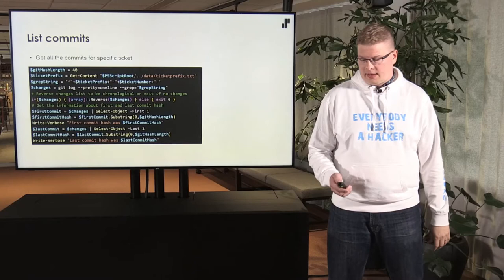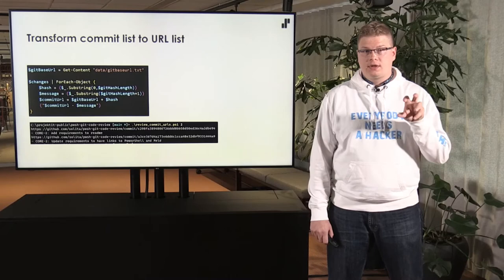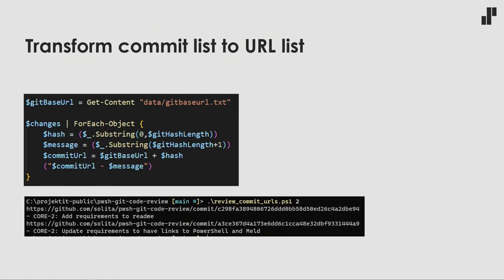Then there are two different ways to review it. We have a list of commit messages, and I can run my commit URL script with a ticket number parameter — for example ticket 2 — and I get a list of commits with GitHub links for each commit belonging to that ticket. So you can easily check them from the remote system, but we also have ways to do it on local machines.